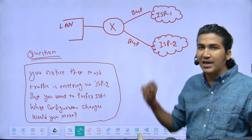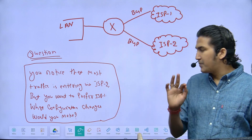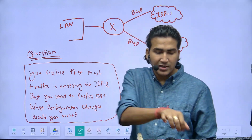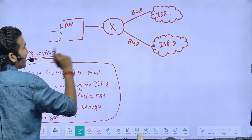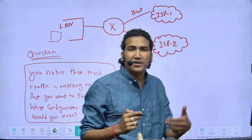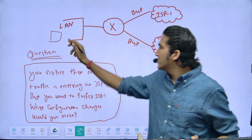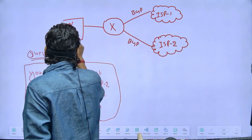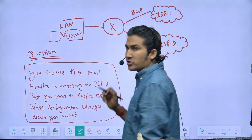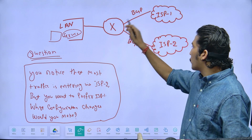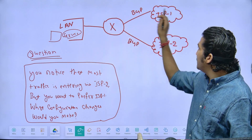Between the edge router and the ISP we are running BGP protocol to advertise and receive prefixes. There is one server on the LAN side, and outside internet users are accessing this server. The server is reachable from outside with the help of BGP.